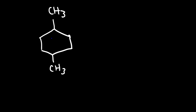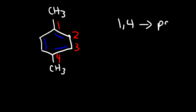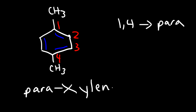For this compound, counting gives positions 1 and 4, so we can call it 1,4-dimethylbenzene. Since 1,4 is the same as para, we can also call it para-xylene, or p-xylene.